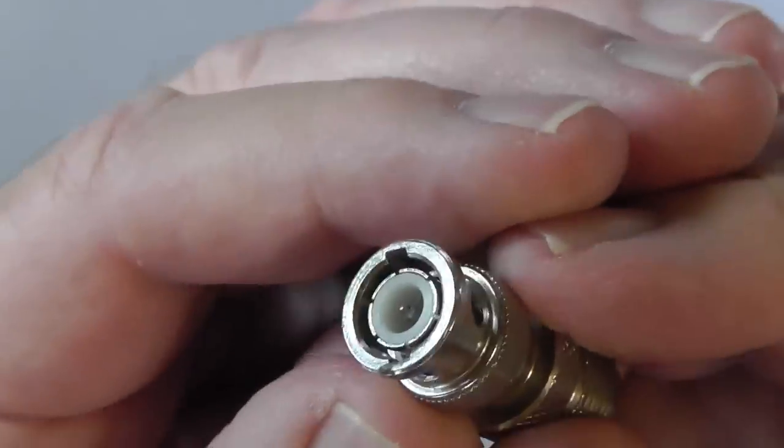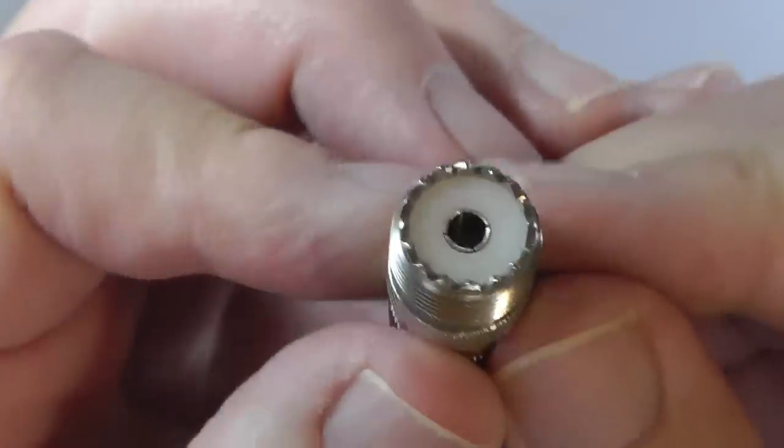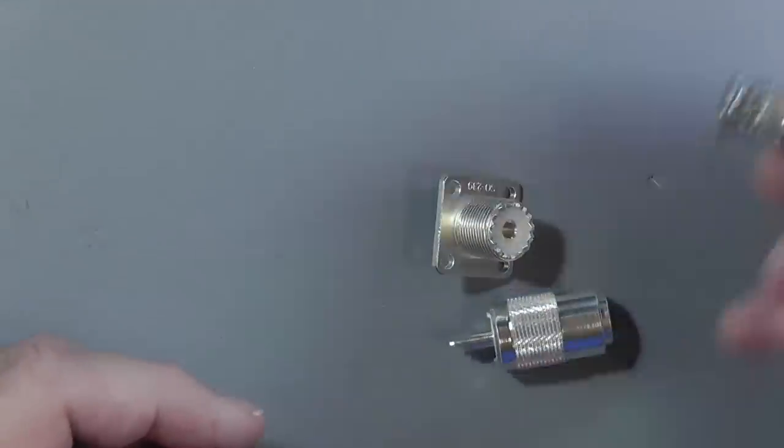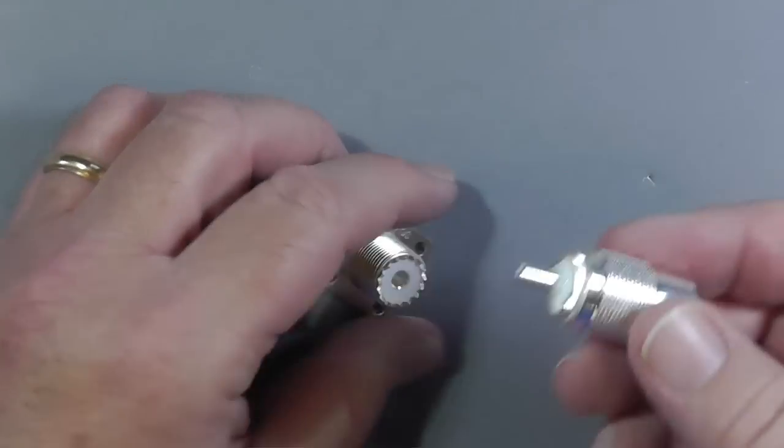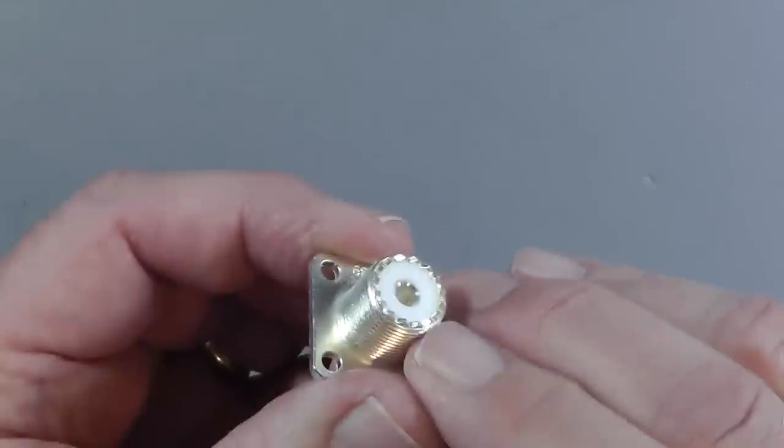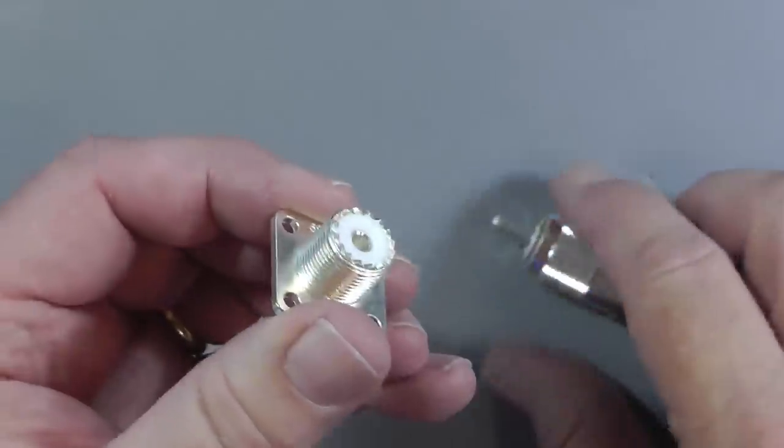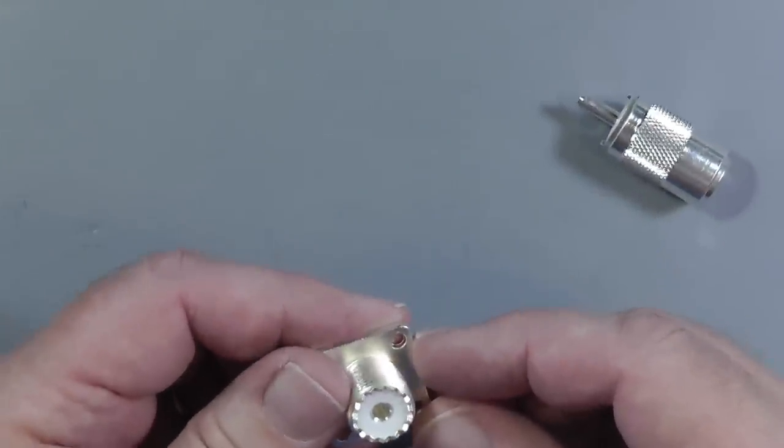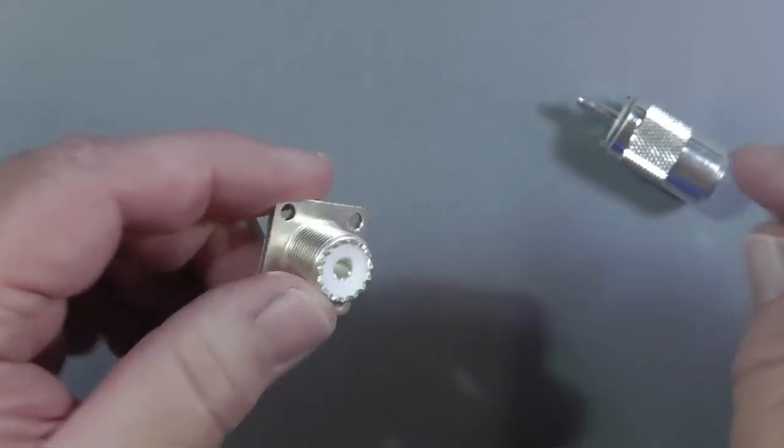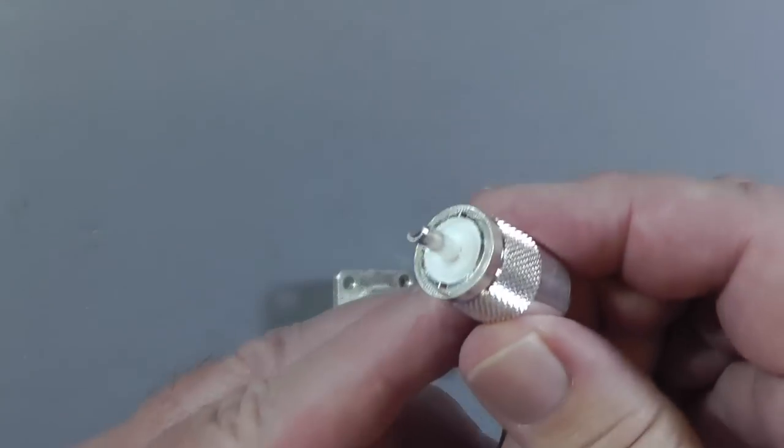Let me just show you one of the adapters. This is a BNC connector, and the other end is an SO239. So I can use my antenna leads that are SO239. That's SO239, and this is a PL259.